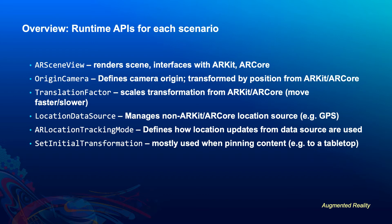The origin camera defines where the virtual scene camera starts initially, and when you move the physical device, ARKit and ARCore move the virtual camera from its origin. Translation factor scales the transformation when you move the physical camera. Set to one, there's a one-to-one correspondence — move the phone an inch, the virtual camera moves an inch. Set it higher and the virtual camera moves more quickly through the scene, so you can quickly traverse an entire city. Location data source is how Runtime gets global location data, such as from GPS, and is a great place to apply calibration manipulations.